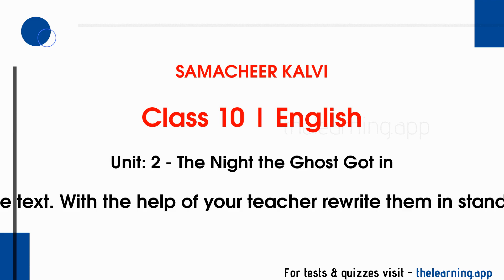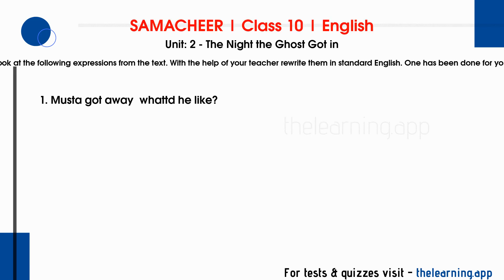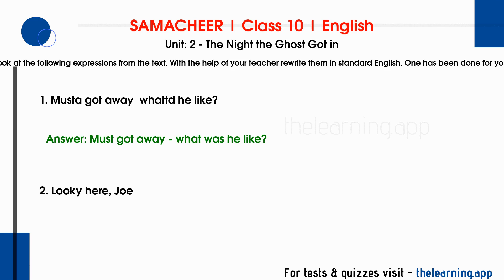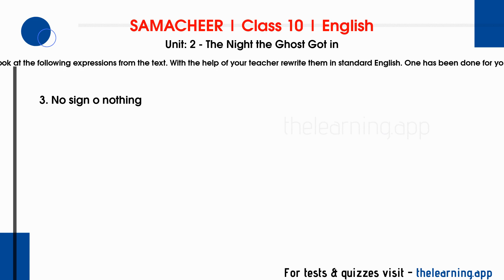Look at the following expressions from the text. With the help of your teacher, rewrite them in standard English. One has been done for you. Question 1: Must have got away, what ye do he like. Correct answer is: must have got away. What was he like? Question 2: Look ye here, Joe. Correct answer is: look here, Joe. Question 3: No sign o nothing. Correct answer is: no sign of anything.